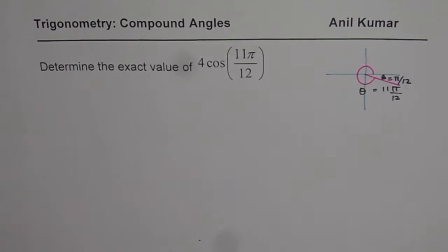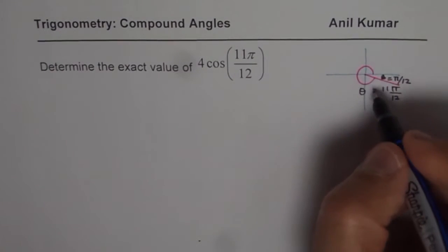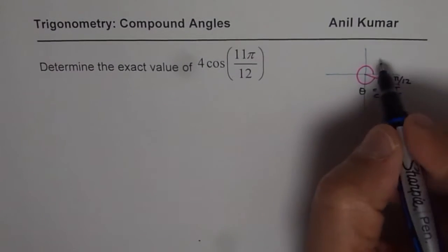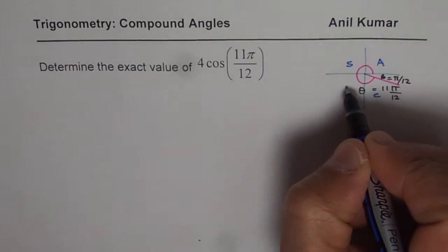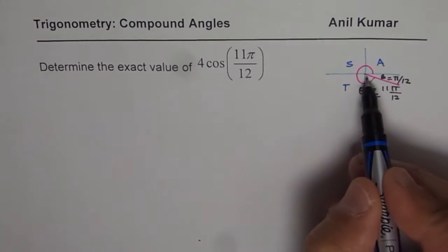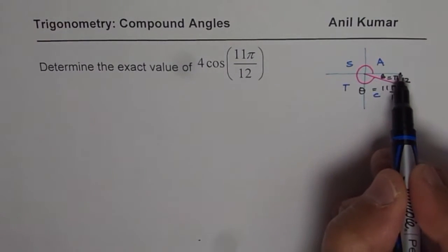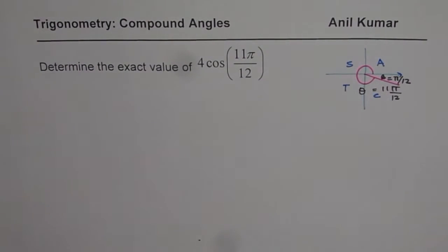So that is one thing. Second thing is you can apply the CAST rule and as per the rule, cos is positive here. So cos is positive, all are positive in coordinate 1, sine into tan and 3. Cos is positive since x coordinate. So it is positive, that is why.